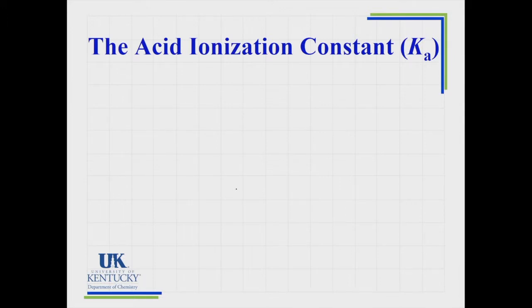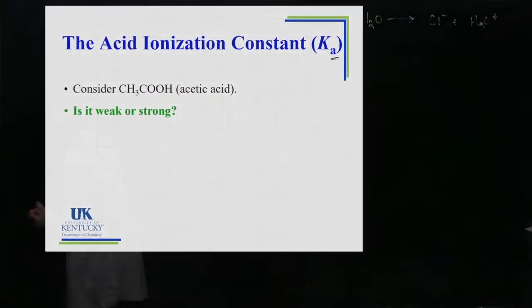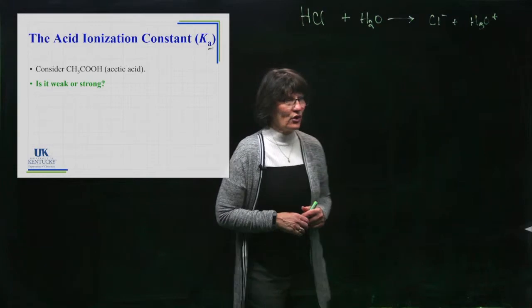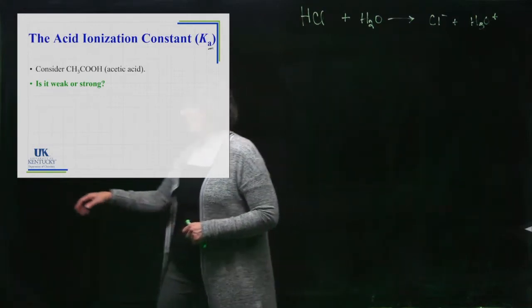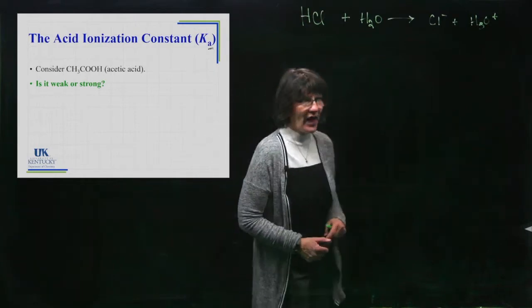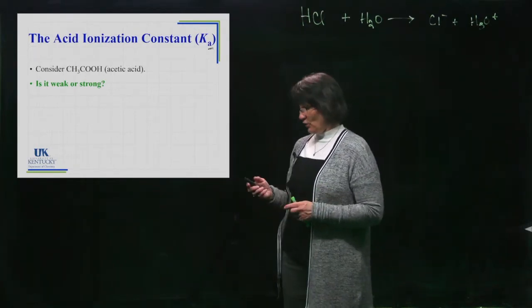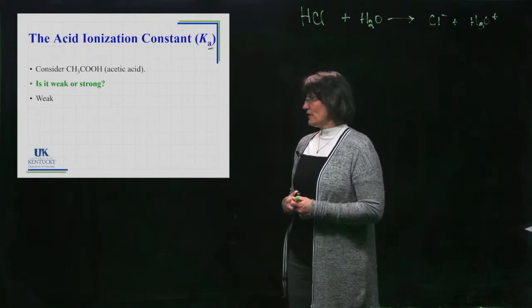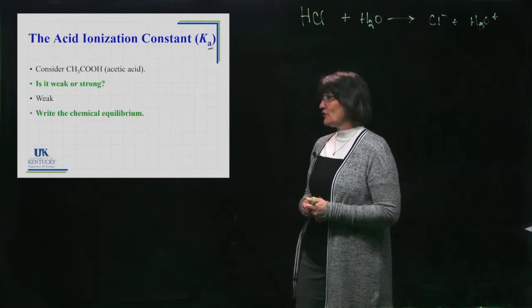Now we're ready to talk about an acid ionization constant, Ka. Remember I told you we'll change this subscript a lot - we had KC, KP, then Kw. Now we've got Ka for the acid ionization constant. It's for a very specific reaction. We're going to consider this substance. Is that a weak acid or is it a strong acid? You know that because you've memorized the six strong and that's not on the list. So it's a weak acid.